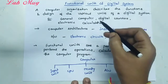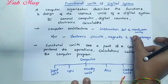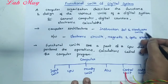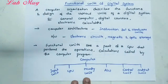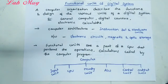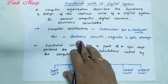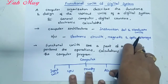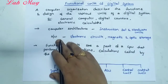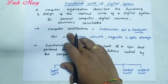What is computer architecture? What are hardware units? Hardware is nothing but electronic circuits, magnetic devices, and optic storage devices. Instruction set and hardware unit implementation is nothing but computer architecture.